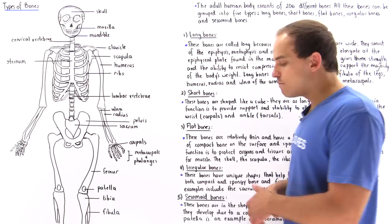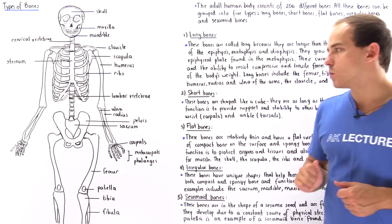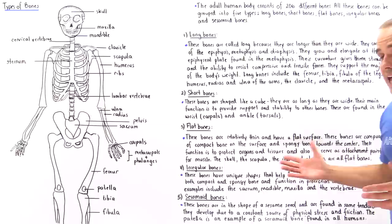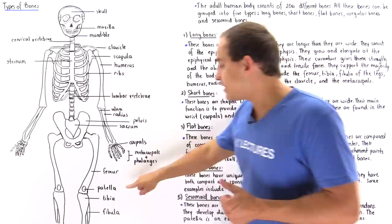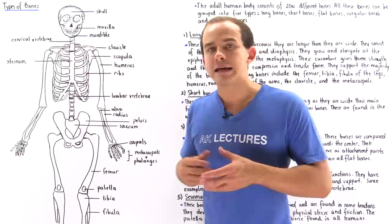The final type of bone is the sesamoid bone. All humans typically contain one sesamoid bone, which is the patella. The sesamoid bone is shaped like a sesame seed and grows on a tendon — the patella is found on the tendon in that region. As a person grows, other sesamoid bones can develop, usually as a result of consistent physical stress or friction.